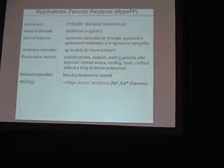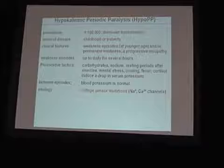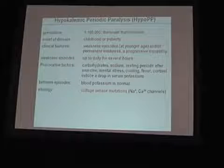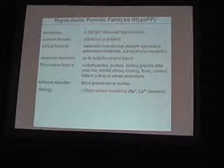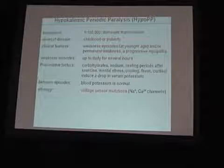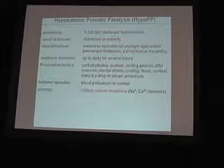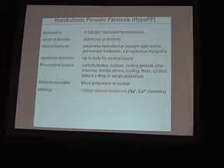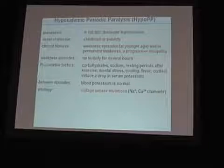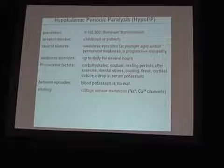Now I will talk about hypokalemic periodic paralysis. The prevalence is about 1 in 200,000 in the population and the transmission is dominant. The onset of disease is usually childhood or puberty. Triggers include carbohydrate-rich meals, mental stress, cooling, fever, and cortisol — all of these agents or circumstances induce a drop in serum blood potassium.